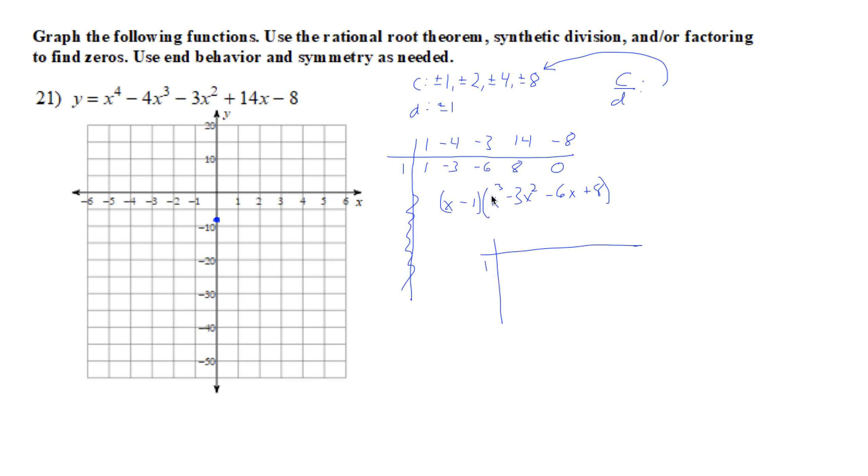So we put 1, we do our new coefficients: 1, negative 3, negative 6, and 8. Bring down the 1. 1 times 1 is 1, plus negative 3 is negative 2. 1 times negative 2 is negative 2, plus negative 6 is negative 8. And 1 times negative 8 plus 8 is 0.